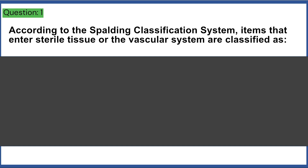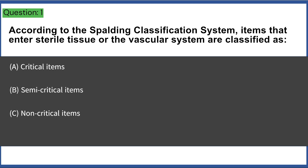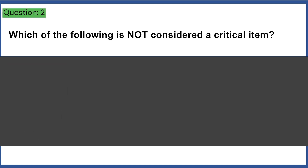According to the Spaulding Classification System, items that enter sterile tissue or the vascular system are classified as: a) critical items, b) semi-critical items, c) non-critical items, d) environmental items. Answer: A, critical items.